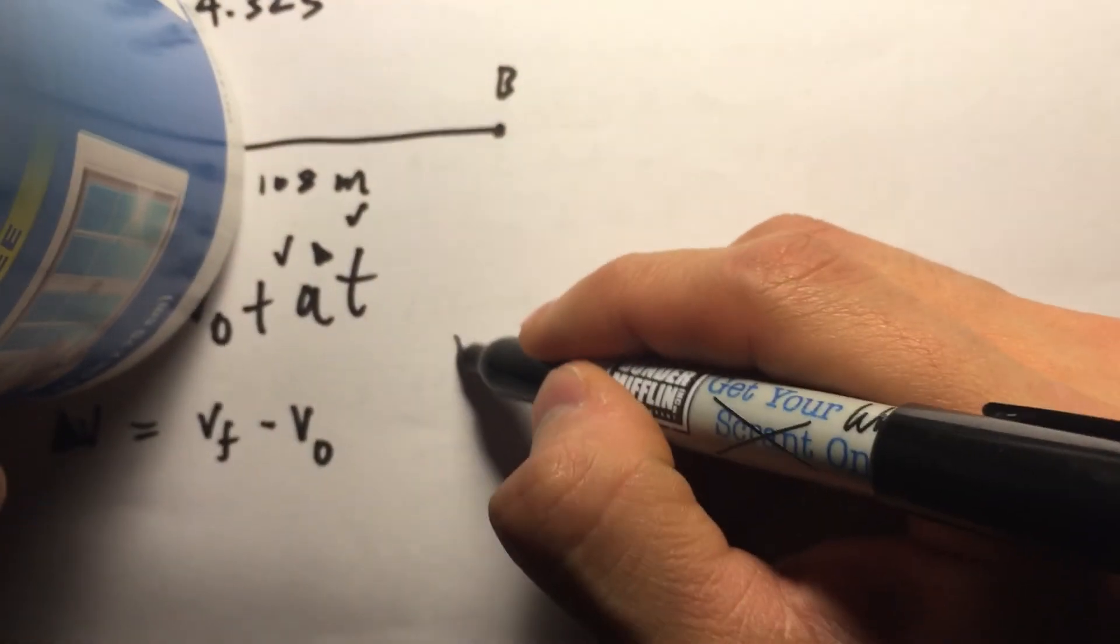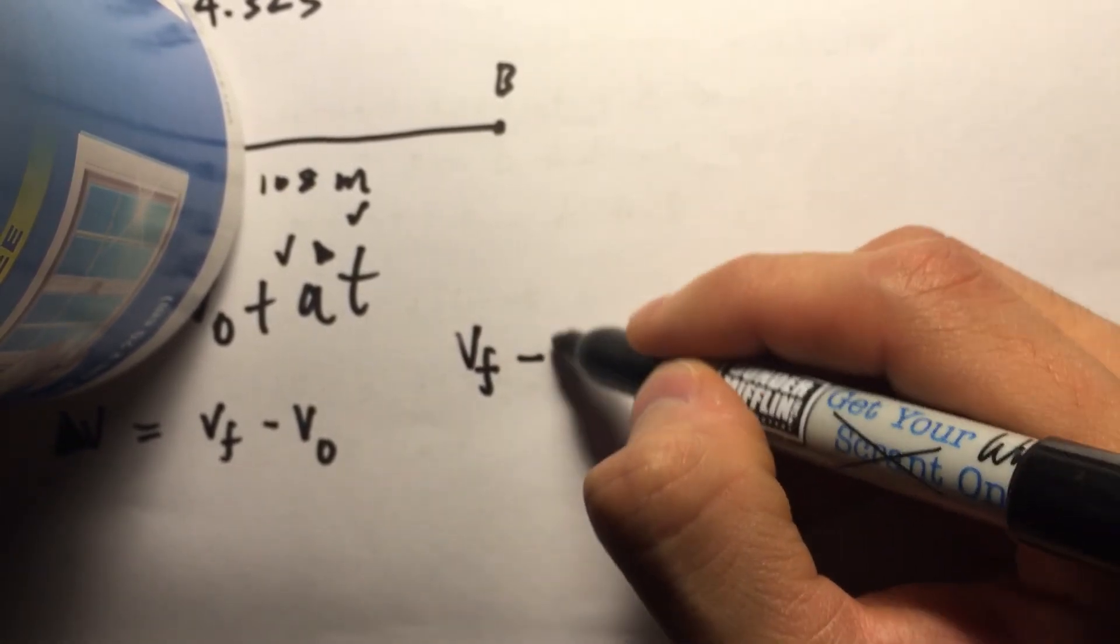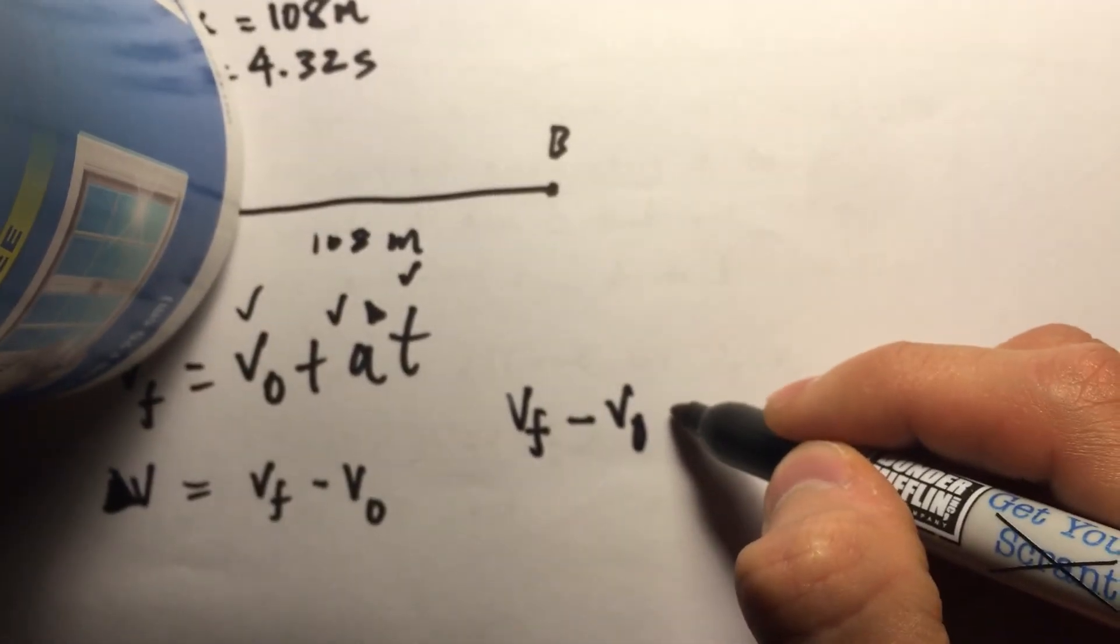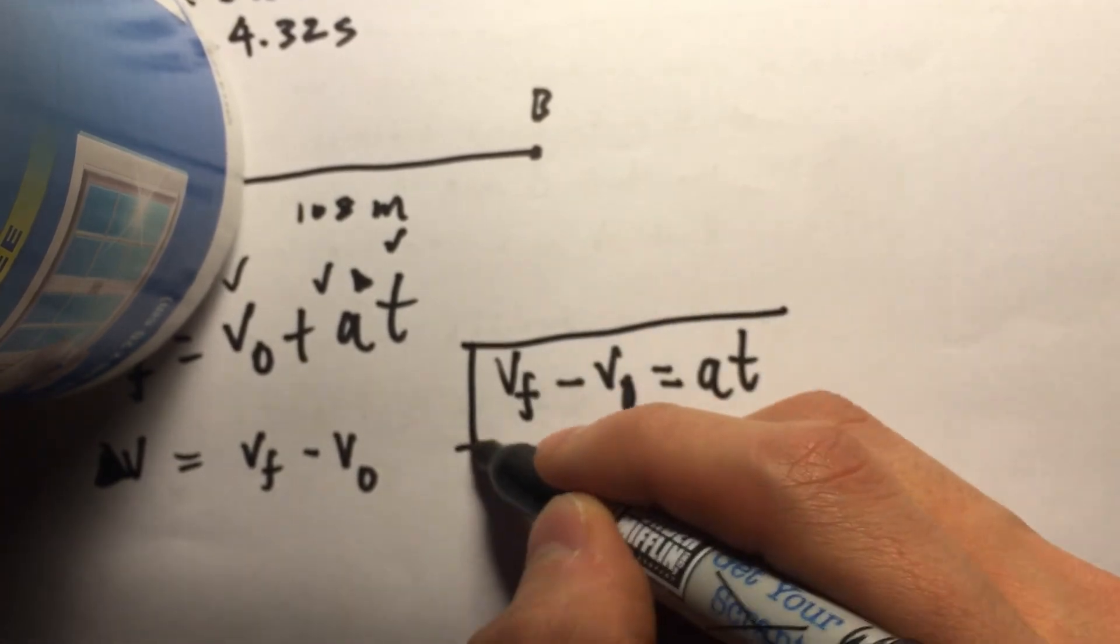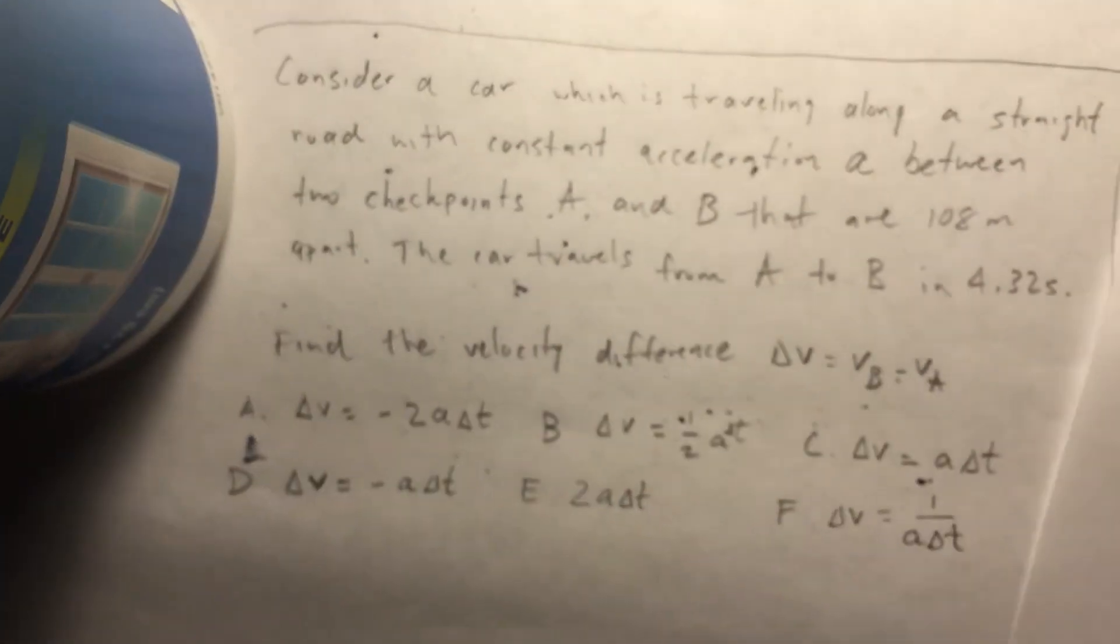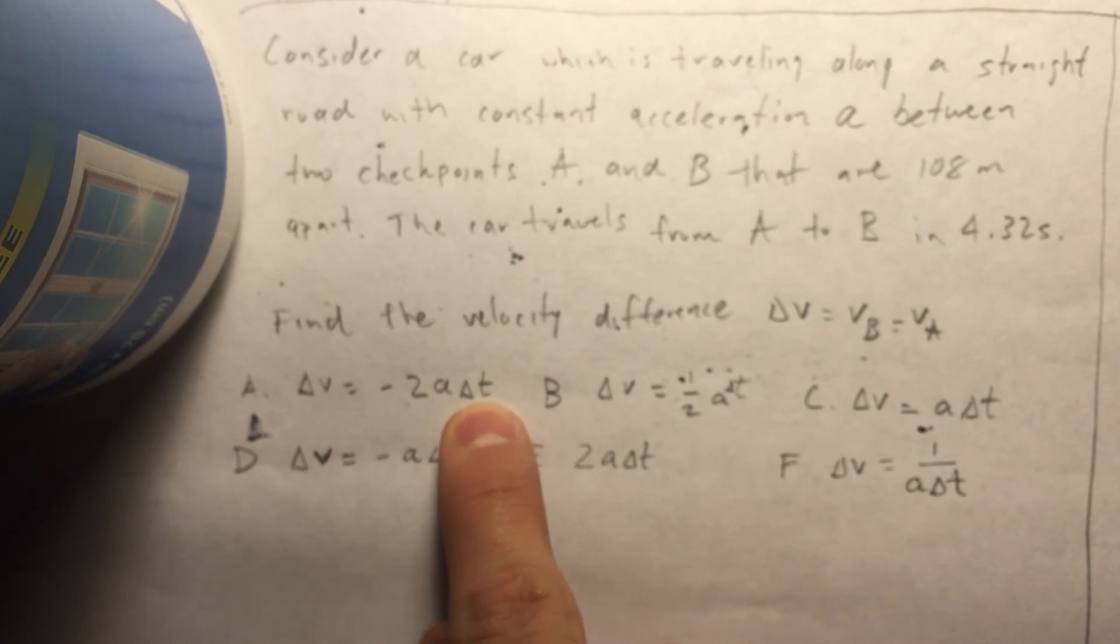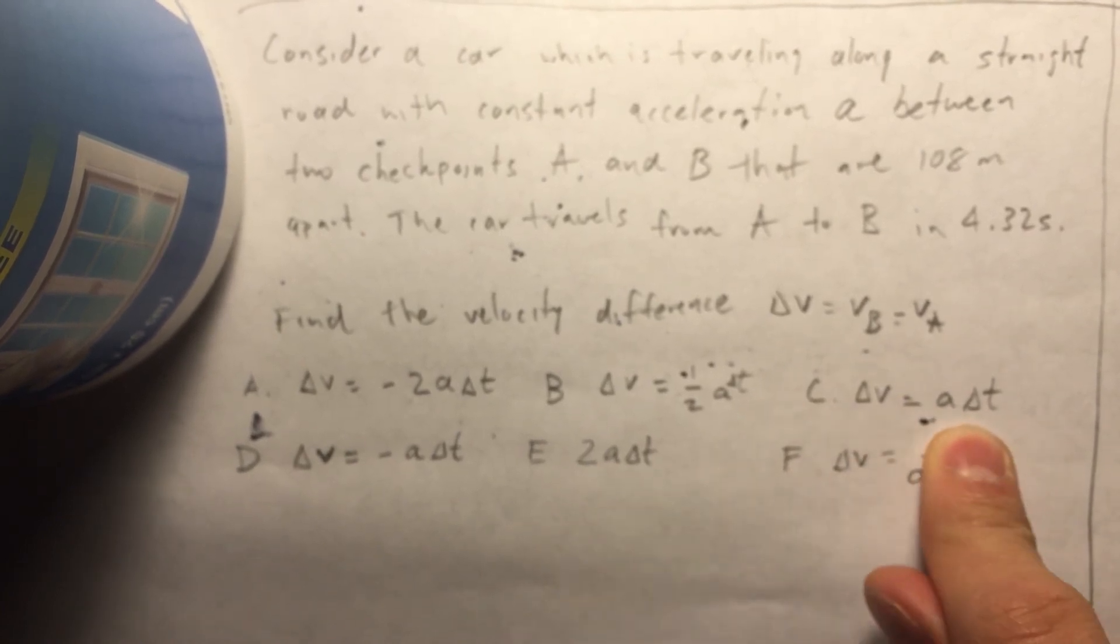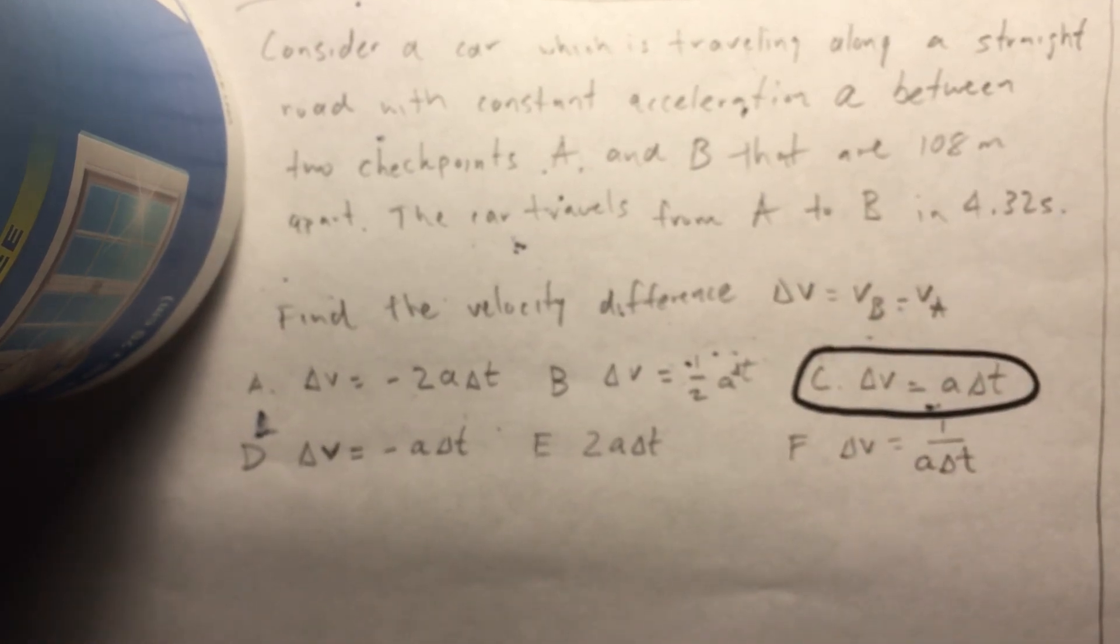And if we look at our answer choice, we have negative 2A delta T, we have delta V, we have one half AT, we have delta V equals AT, and that is exactly what we found earlier. And there you go.